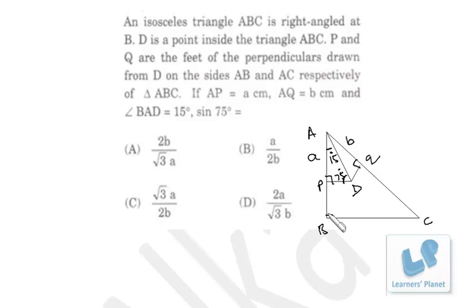Now see, this is 90°. Since AB is equal to AC, angle C must be 45° and this complete angle must be 45°. So if BAD is 15°, the remaining part will be 30°.